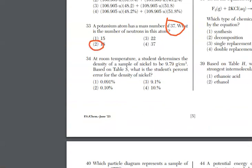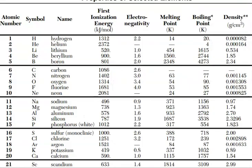For 34, at room temperature, student determines the density of a sample of nickel to be 9.79. Based on table S, what is the percent error for the density of nickel? We're going to table S. We're going to get the density. Then we need the percent error formula, which is on reference table T. We're looking for the density for nickel. The density is here in this column. And we're going to scroll down.